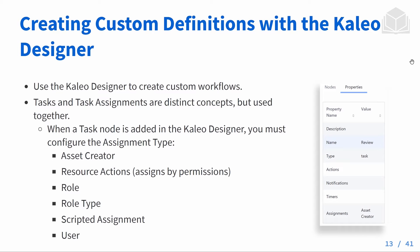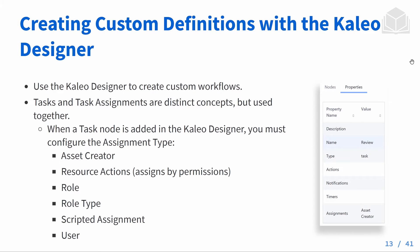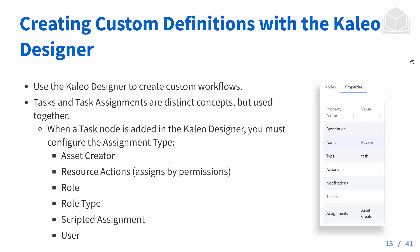Whenever we're creating tasks, we're going to be determining those task assignments at the same time. Tasks are the meat and potatoes of workflows, and whenever we drag a task node out into the designer, we have to configure the assignment type — so who's actually going to carry out this task. This could be the asset creator, resource actions (assignment by permission), a specific role, a role type covering a collection of roles, a scripted assignment for more custom delegation, or even an individual user.